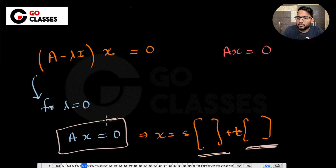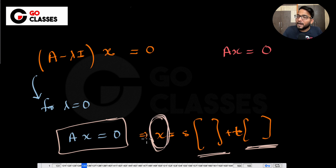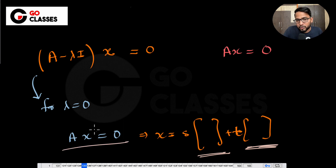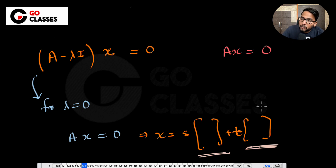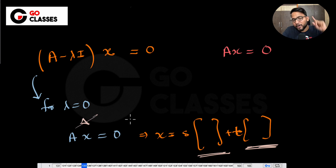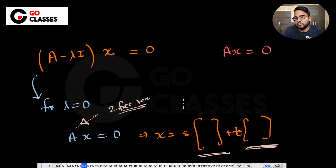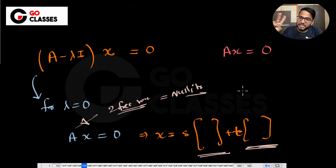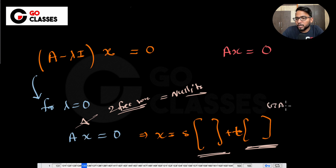When λ = 0, solving Ax = 0 gives us the eigenvectors — x is now the eigenvector. If there are two linearly independent eigenvectors corresponding to λ = 0, that means there are two free variables in the system, so nullity is 2. Therefore rank = n - 2. The number of linearly independent eigenvectors for λ = 0 equals the nullity.